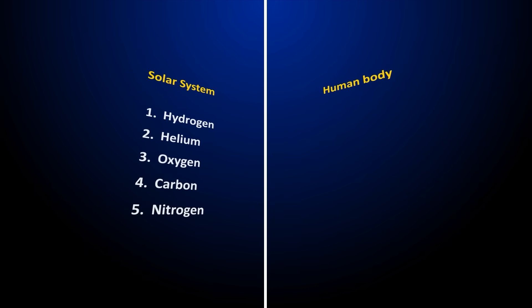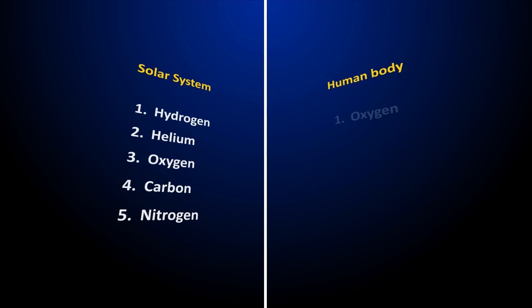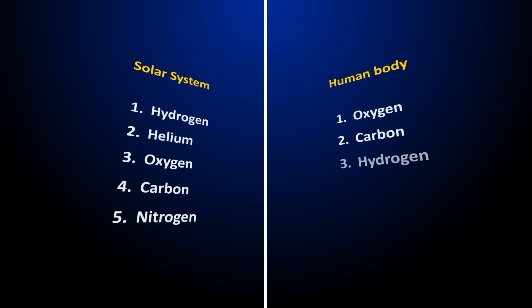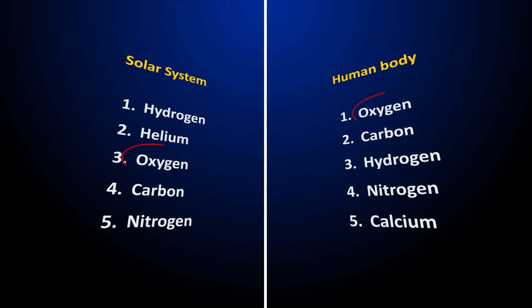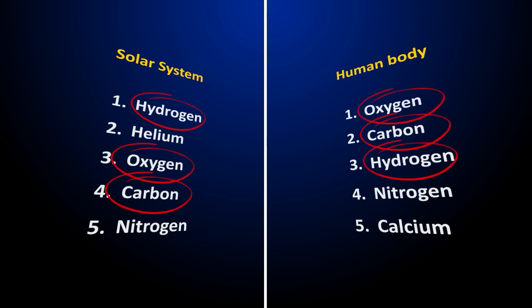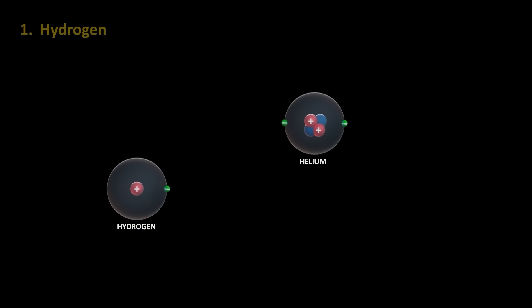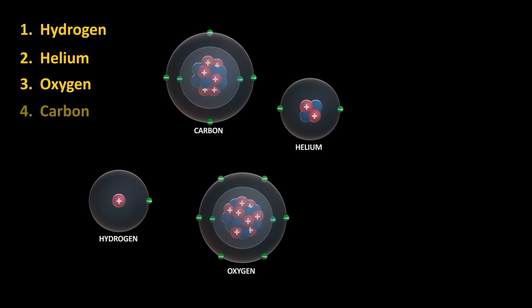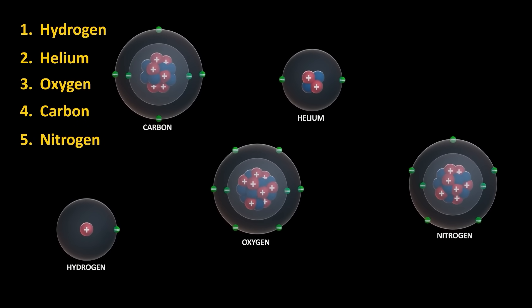Now if we look at the top five elements in our body, we see: Oxygen, carbon, hydrogen, nitrogen, and calcium. So four out of the top five elements of the solar system are also among the top five elements making up the human body. This gives us another clue about why life is based on carbon. There is plenty of it in the universe. It's very abundant.